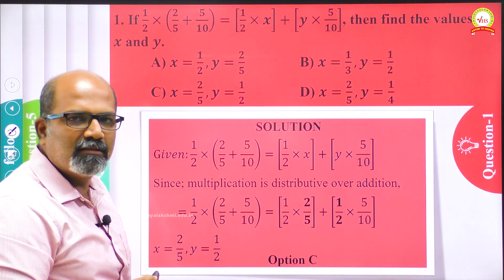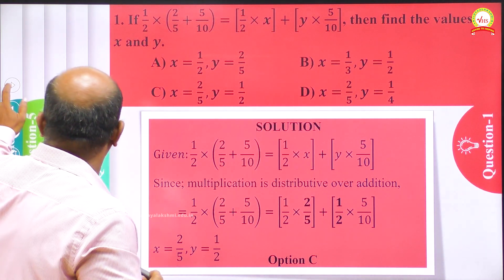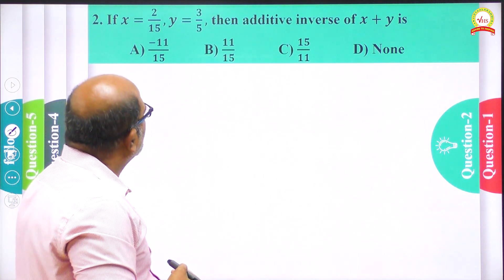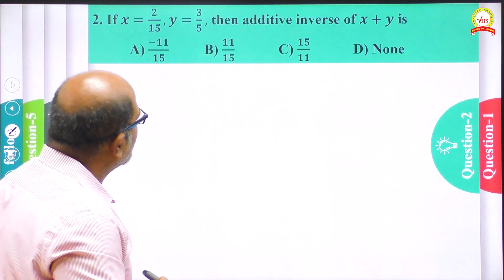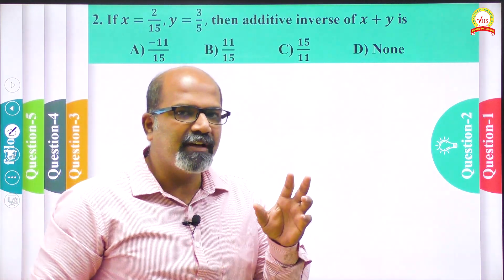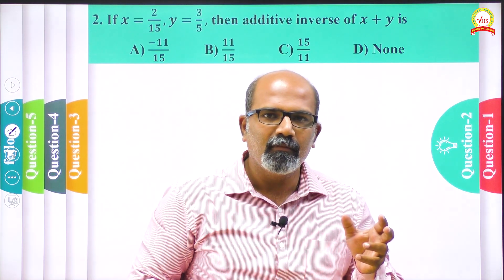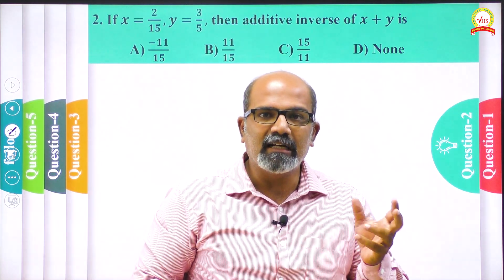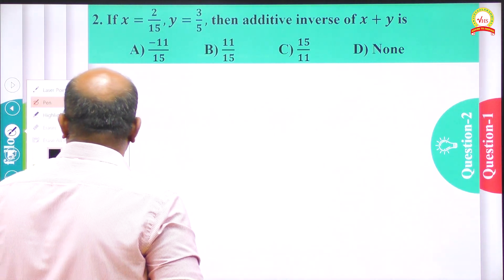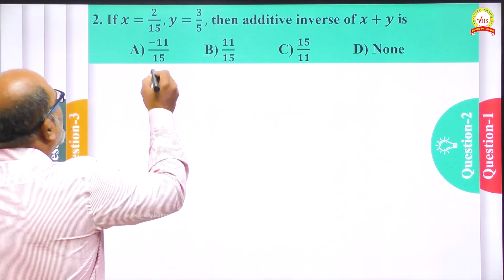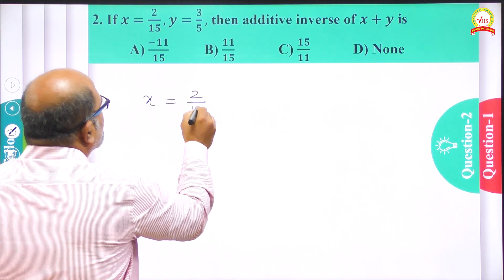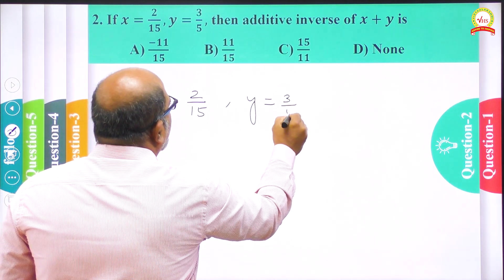Now we move to question number 2. If x = 2/15 and y = 3/5, then the additive inverse of x + y is asked. It is not just asked to find x + y — you have to be aware that it is asking for the additive inverse of x + y. I am taking the given values: x = 2/15 and y = 3/5.